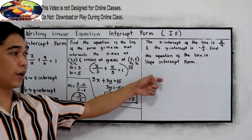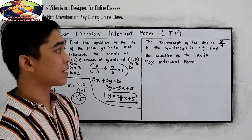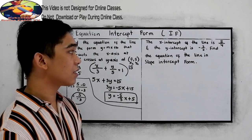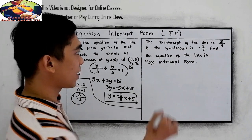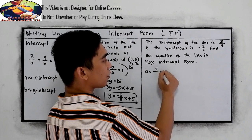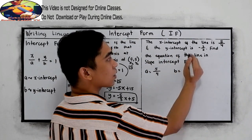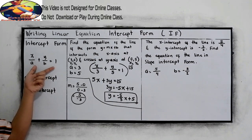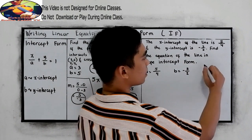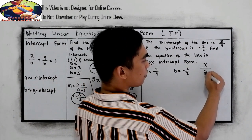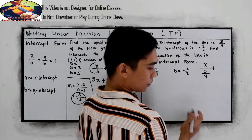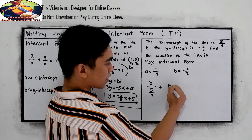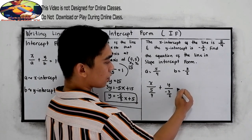Now, let's try number 2 example. The x-intercept of the line is 5 over 4, and the y-intercept is negative 3 over 2. Find the equation of the line in slope-intercept form. So, the x-intercept, or a, is equal to 5 over 4. The y-intercept, b, is equal to negative 3 over 2. Following our intercept form, x over 5 over 4, plus y over negative 3 over 2, is equal to 1.